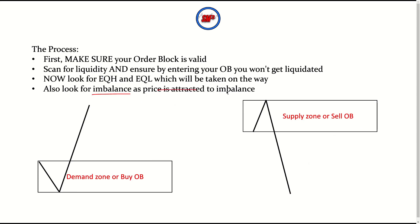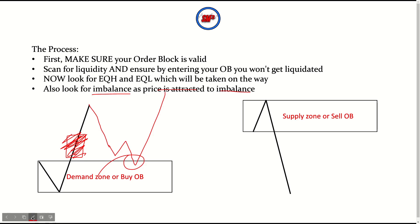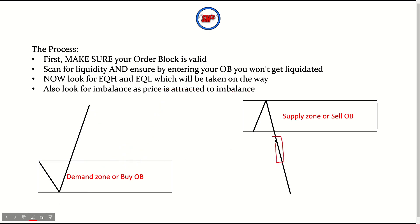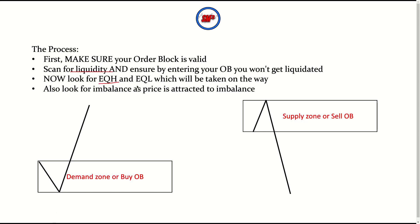Lastly, look for imbalance, as price is attracted to imbalance. If there's an imbalance area — a huge candle or area of price inefficiency — price will be attracted to mitigate it, filling out orders that haven't been filled. It may show some reaction there, and then we'll get the mitigation of our order block. So those are the three most important confluences: look for liquidity, look for equal highs and lows that will be taken out, and look for imbalances.